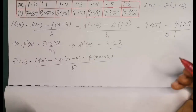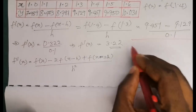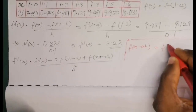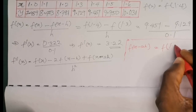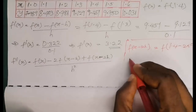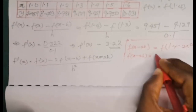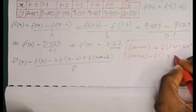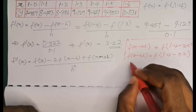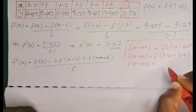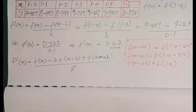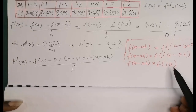To find f(x minus 2h): x is the point of interest, 1.4, so f(x minus 2h) equals f(1.4 minus 2 times 0.1) equals f(1.4 minus 0.2) equals f(1.2). So f(x minus 2h) is f(1.2).